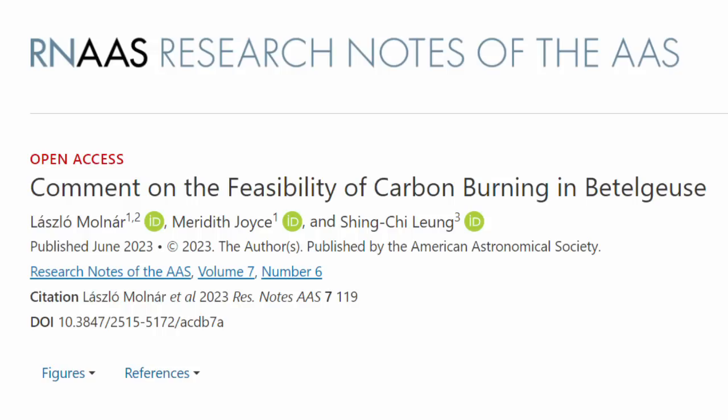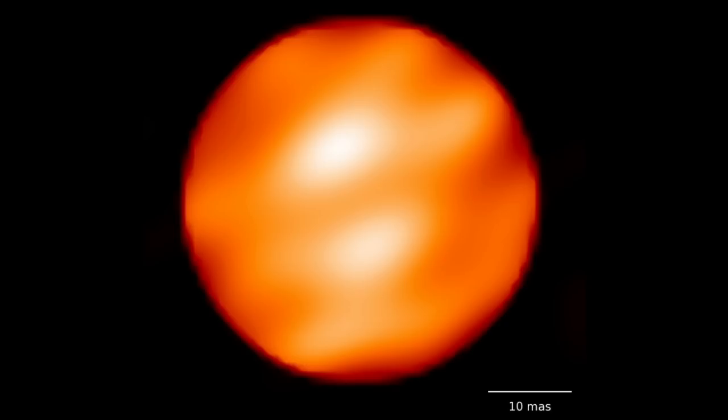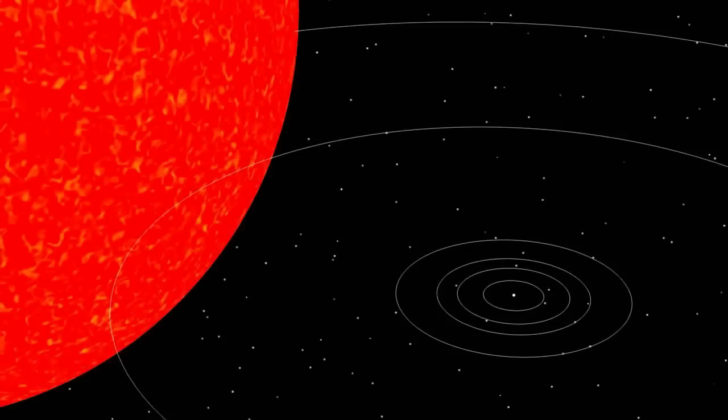Needless to say, Meredith Joyce was quick to respond. On the 7th of June, she and her team published a preprint in the research notes of the American Astronomical Society, noting that observations by multiple scientists had shown that Betelgeuse's angular diameter cannot be larger than 45 milliarcseconds, which would correspond to a diameter 1100 times that of the sun, and likely lower.